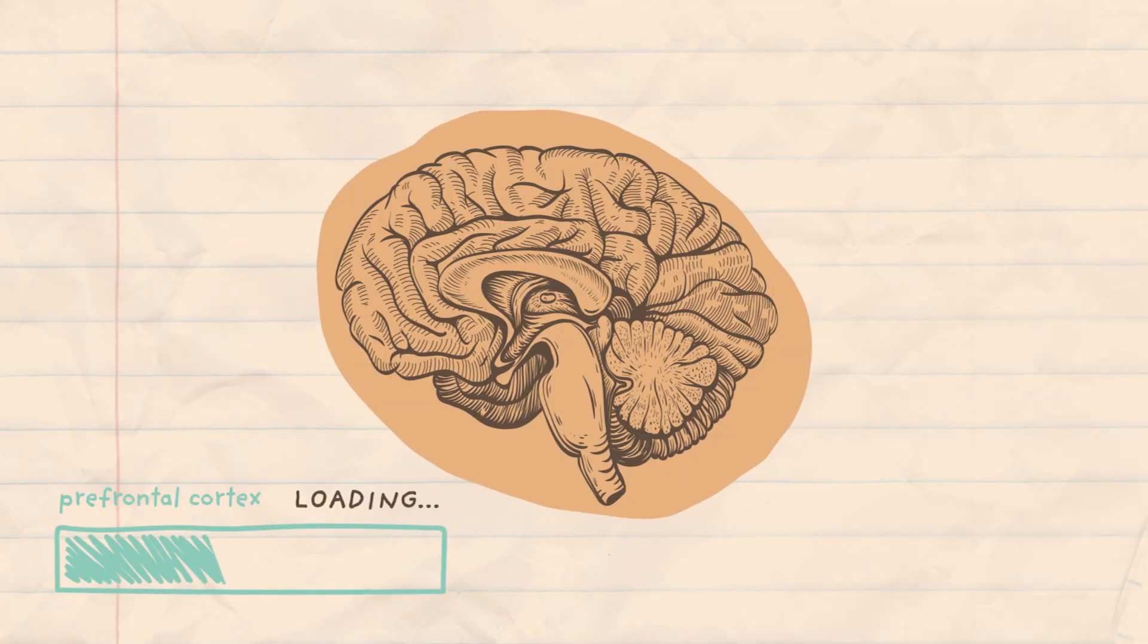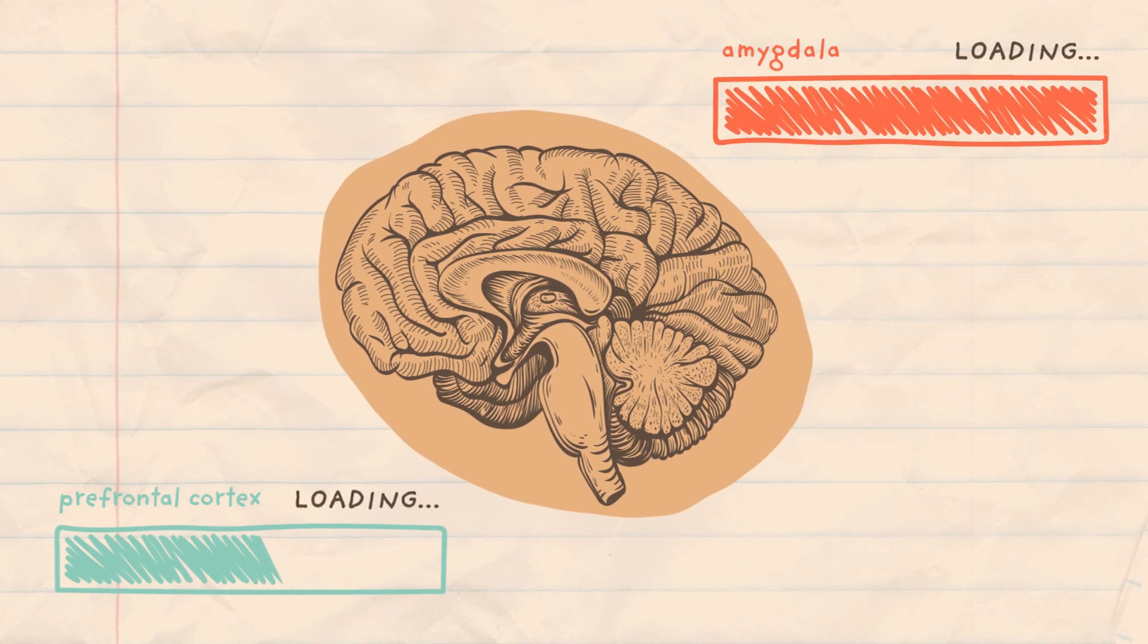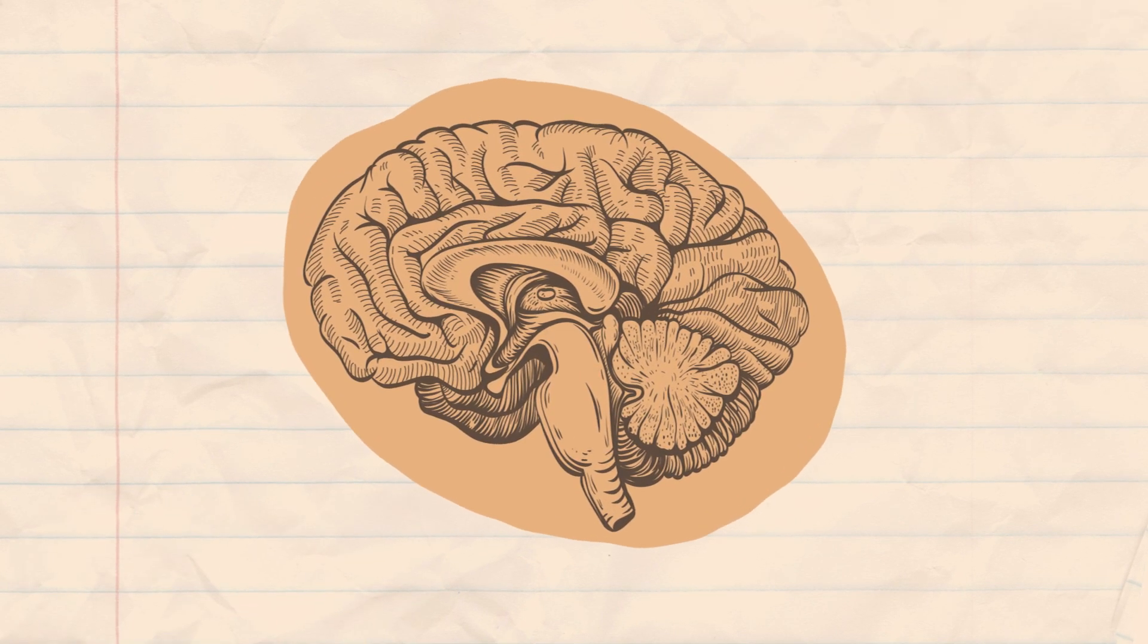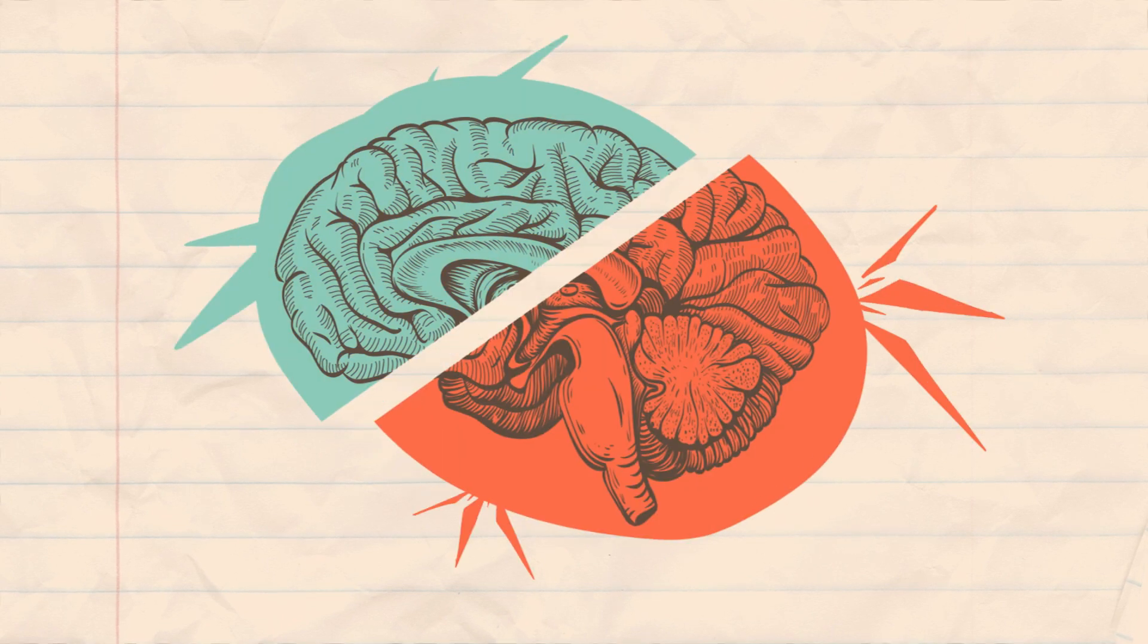Our prefrontal cortex is one of the last parts of the brain to fully develop. This usually happens by our mid-20s. The amygdala, on the other hand, develops well before the prefrontal cortex, so adolescence involves a period where these two parts of the brain aren't fully connected to one another.